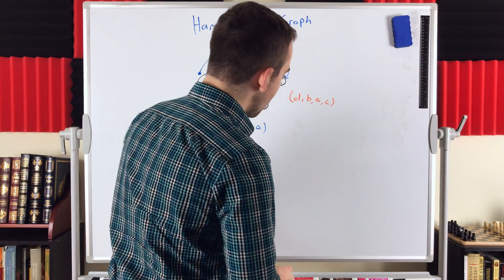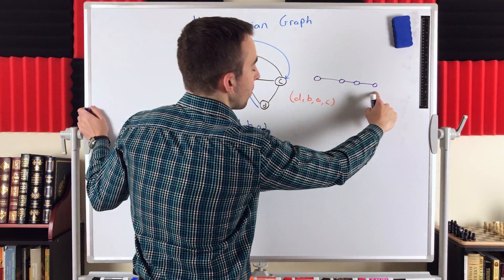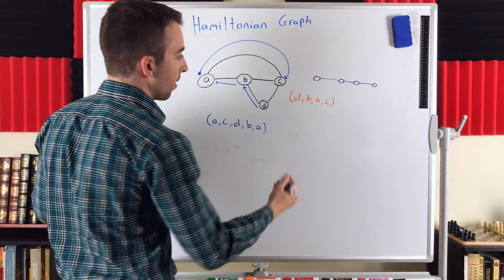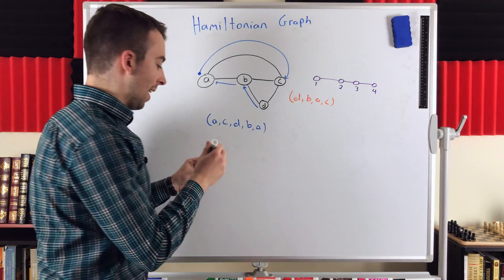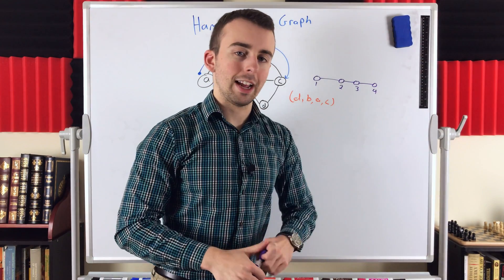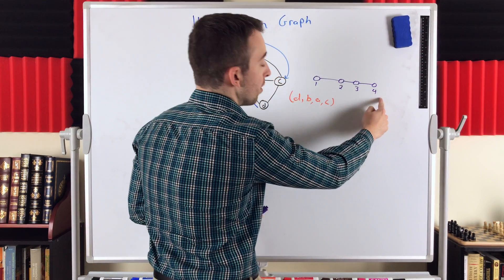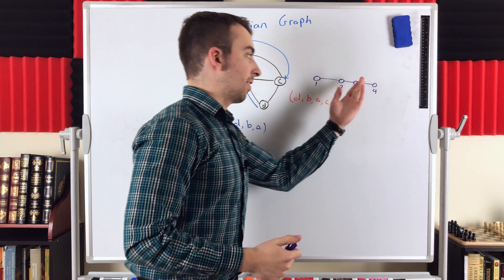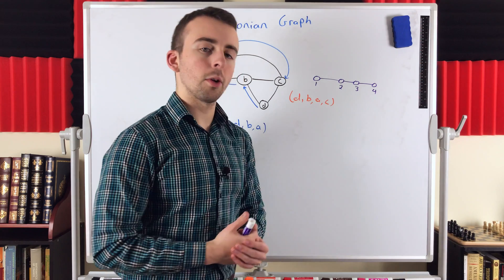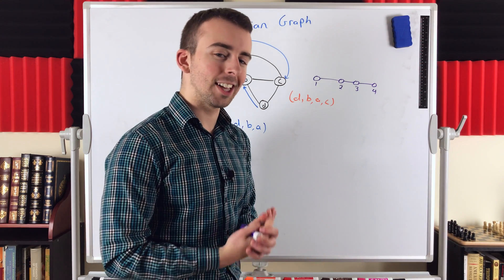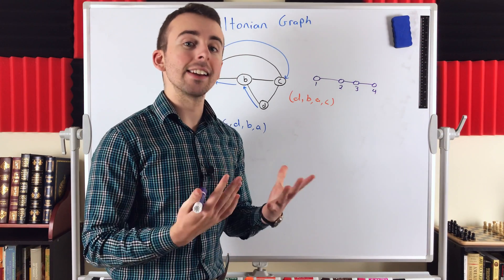Here's a simple example. Any path graph will do — let's look at the path graph on four vertices. This path graph clearly has a Hamiltonian path: we can go from vertex one to two to three to four, a path containing every vertex. However, there's no Hamiltonian cycle in that graph. Once we get to vertex four, there's no way to get back to where we started without passing through vertices or edges multiple times, which isn't allowed. So having a Hamiltonian path does not guarantee a Hamiltonian cycle, but a Hamiltonian cycle always yields a Hamiltonian path by deleting any one edge.